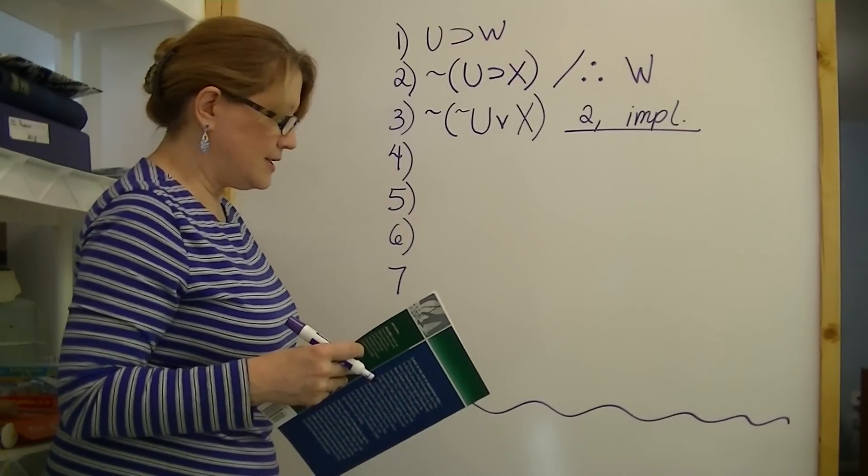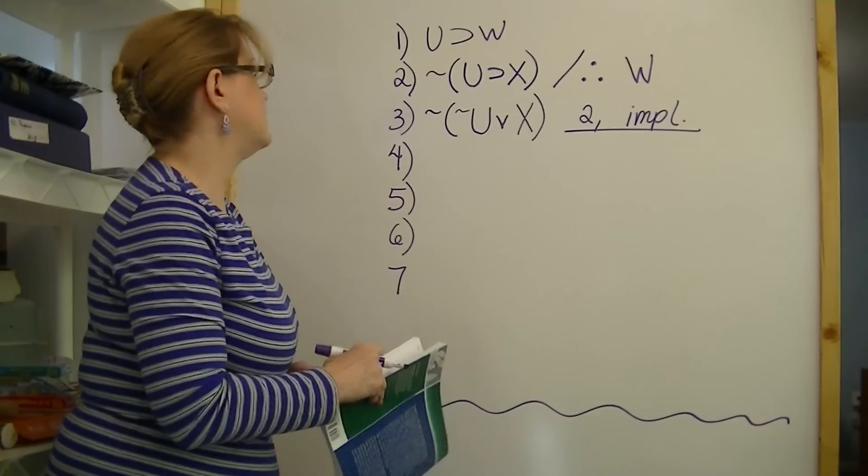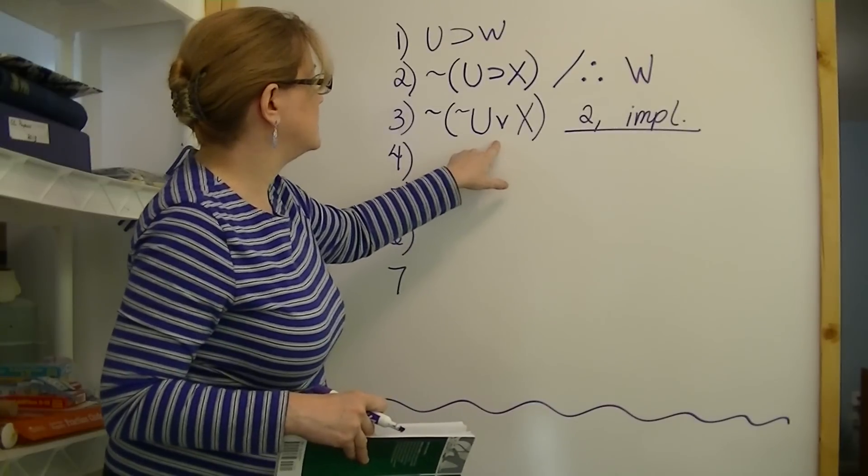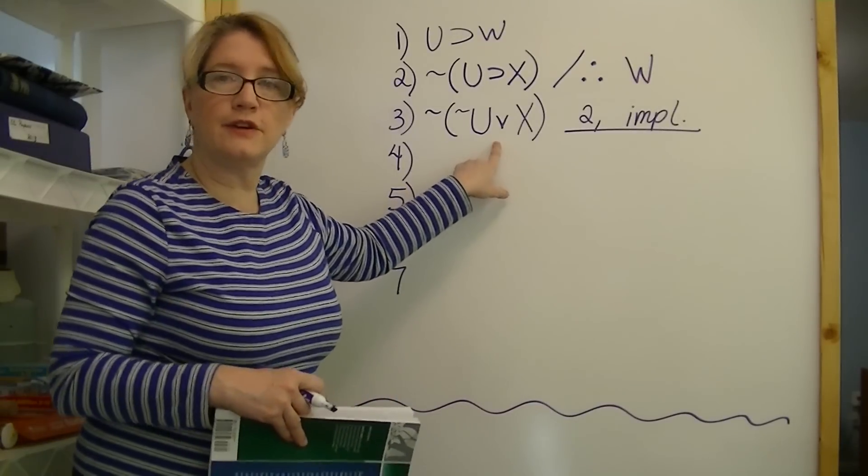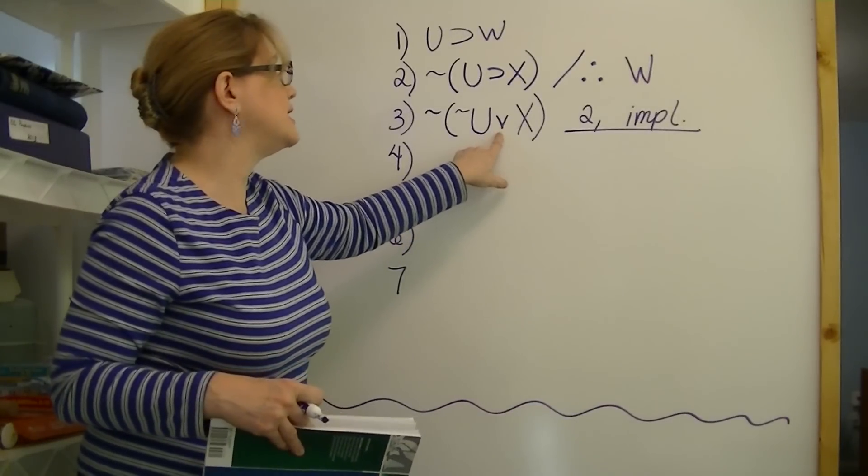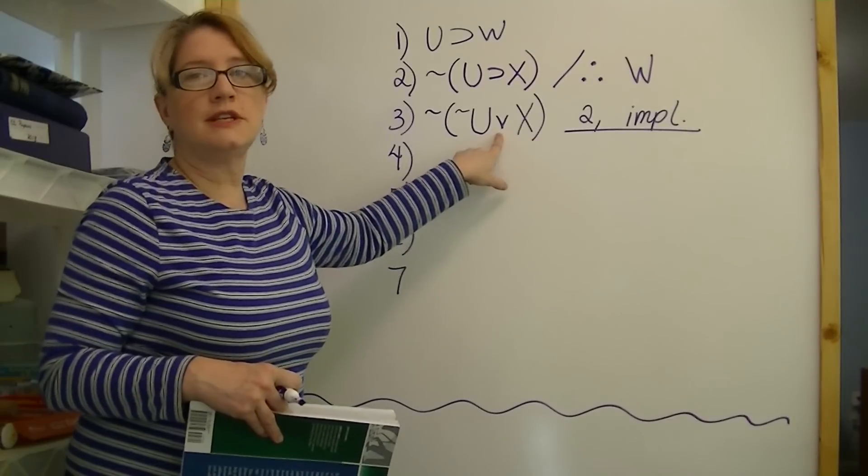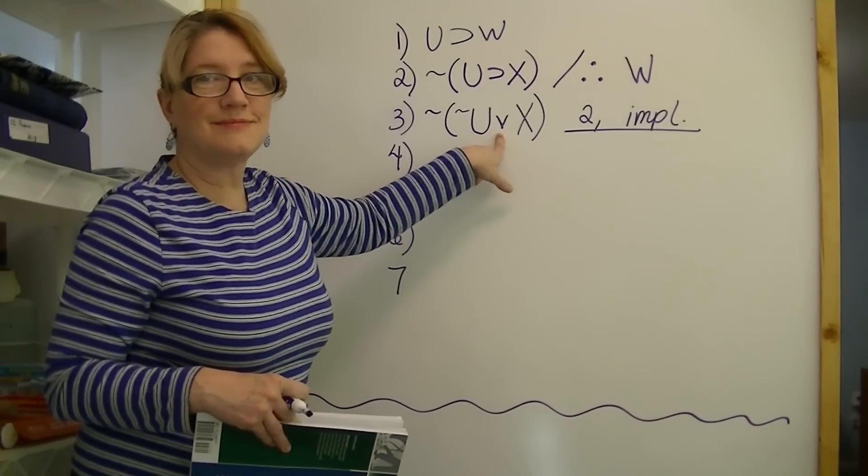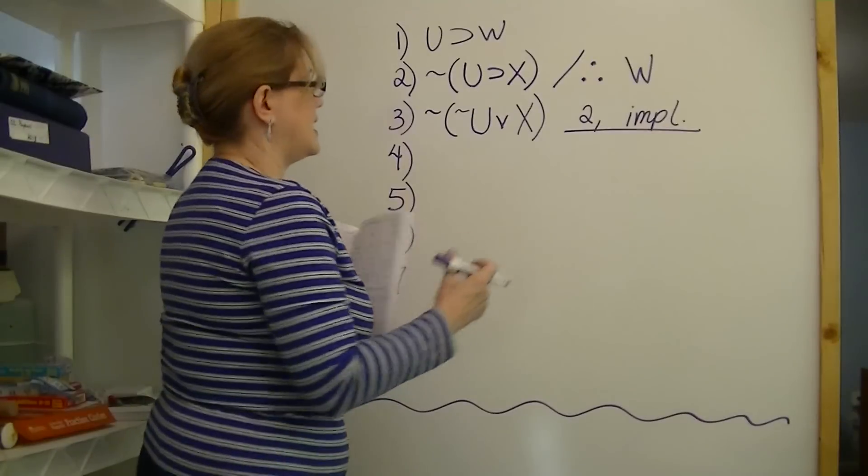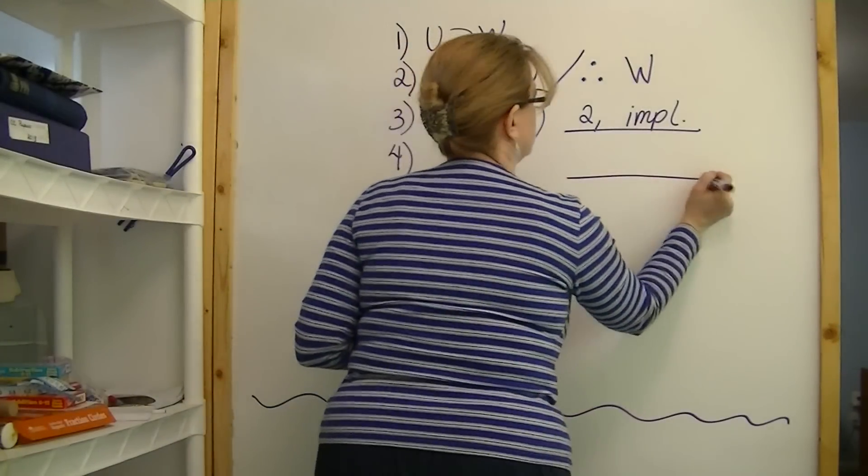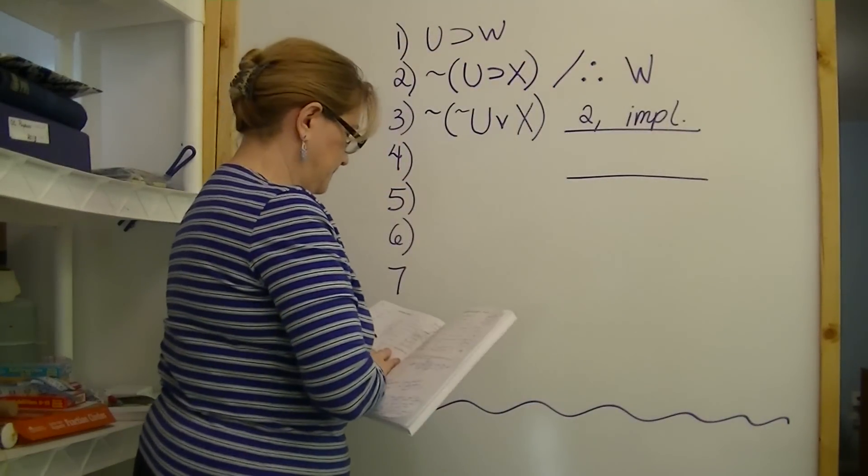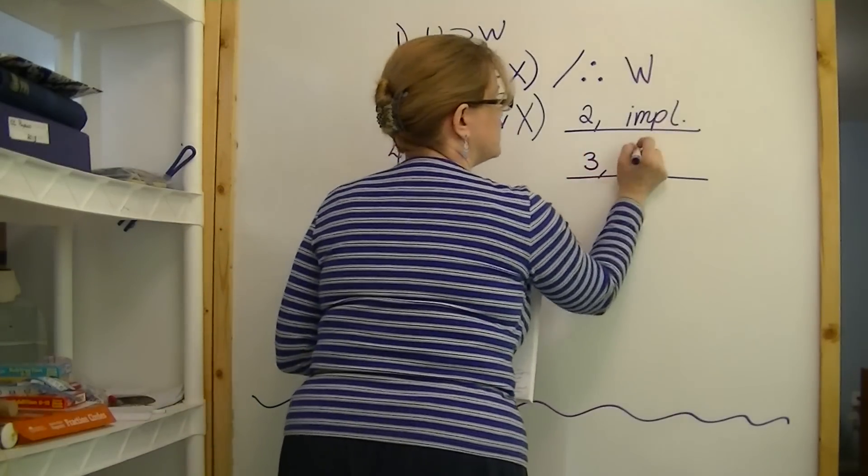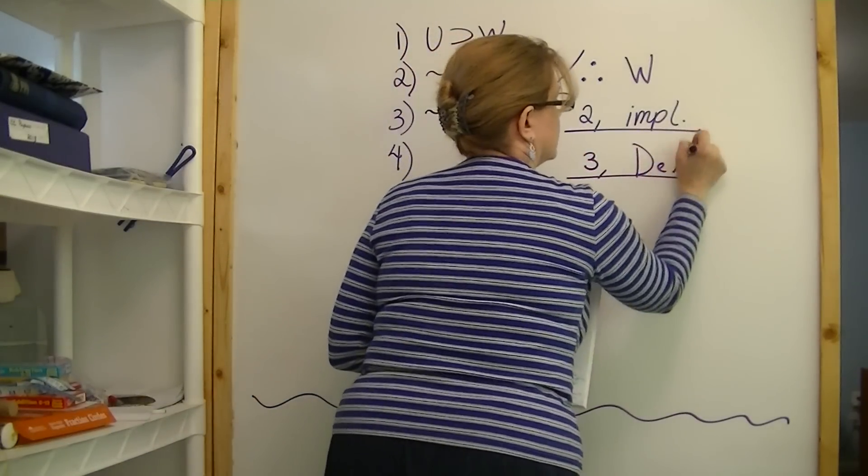Now the next thing we need to do, because we still want to get rid of the X, we need to change it to an and. Now if you look in the back of your book, you can see the way to change a disjunction into a conjunction is with DeMorgans. So let's do that. If you look in the back of your book, we're going to just do line three and do a DeMorgans on it.